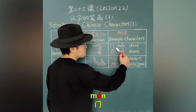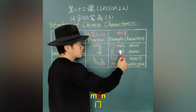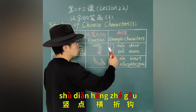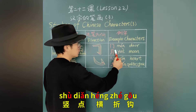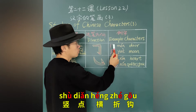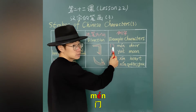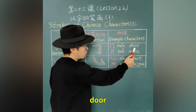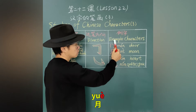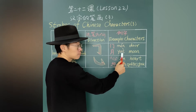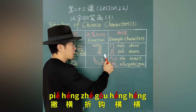Example characters using 横折沟: 门 (door), 医院 (hospital), 月 (moon), 便, 越, 拼.